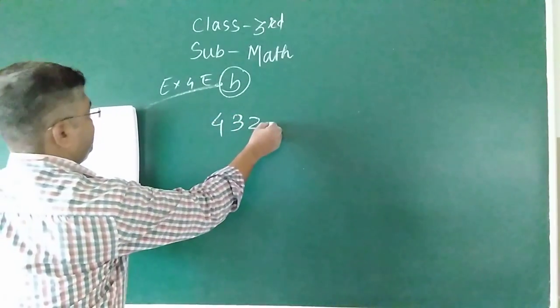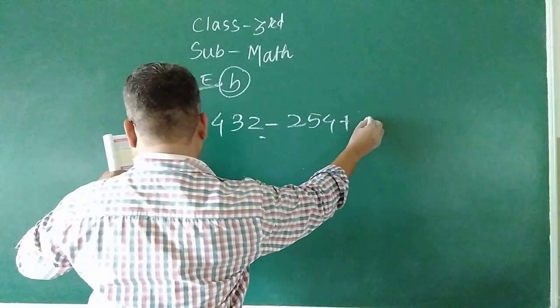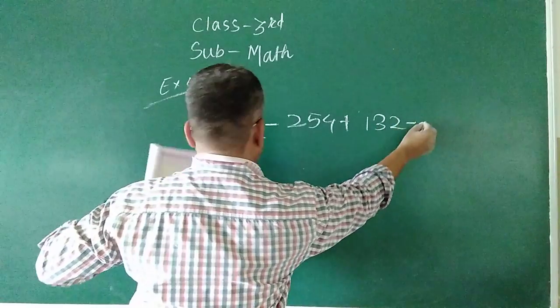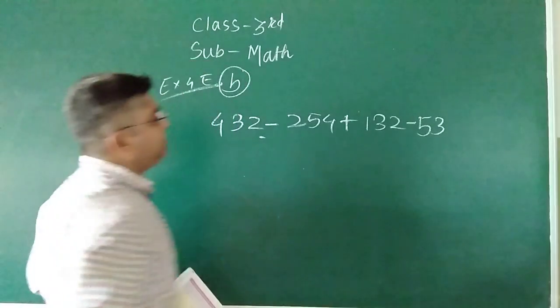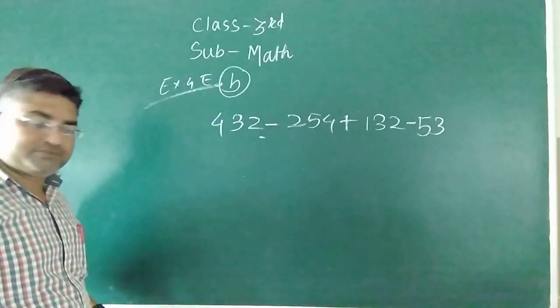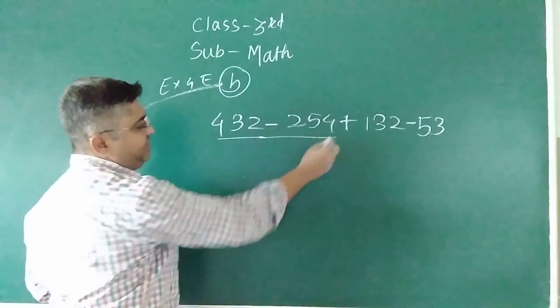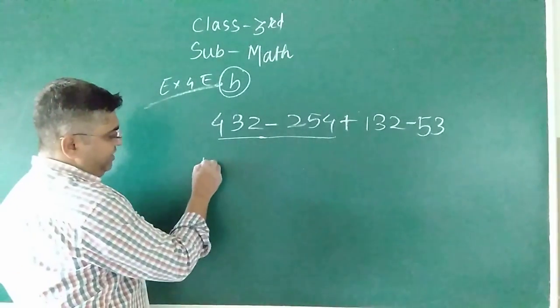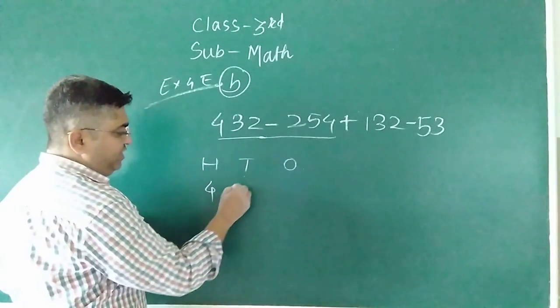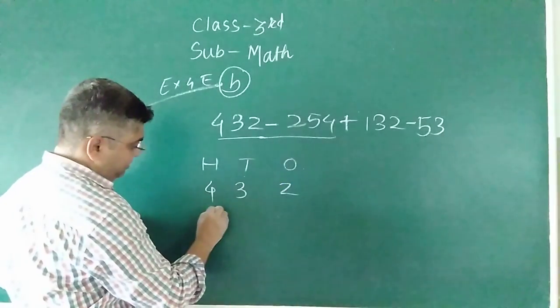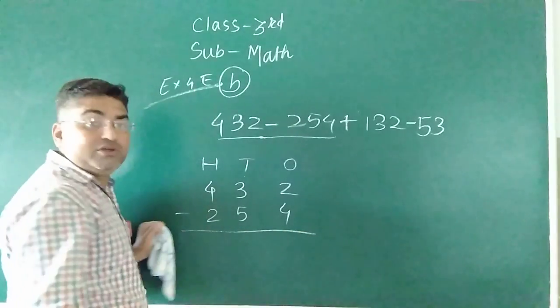See the next problem. 432 minus 254 plus 132 minus 53. So this is the question. First of all, we can solve this. This is hundreds place, tens place, and ones place. So what is 432 minus 254?